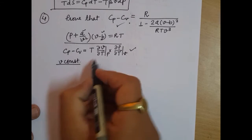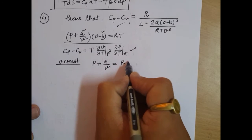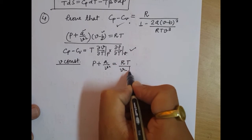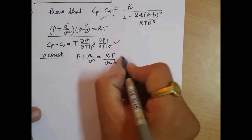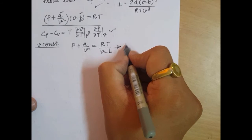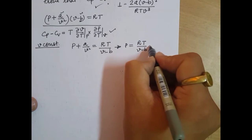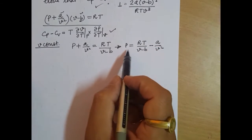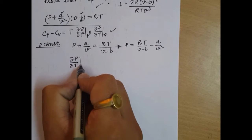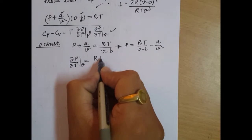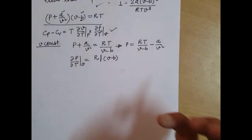Keeping volume constant, we can write P plus A by V squared equals RT upon V minus B, or equivalently, P equals RT upon V minus B minus A by V squared. Differentiating with respect to temperature at constant volume gives: (∂P/∂T) at constant volume equals R divided by V minus B.